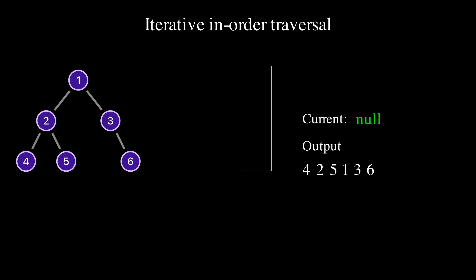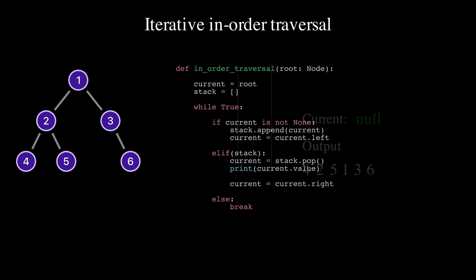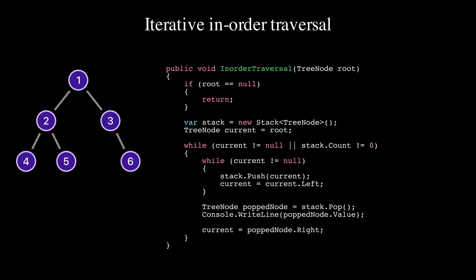Node 6 was the last node to traverse. We completed in-order traversal because the stack is empty and the current is null. Iterative and recursive implementations produce the same output and have the same time complexity. The recursive version is a bit easier to read and write. It's good to know how to implement the iterative version because it's one of the basic algorithms. Here is how to implement the in-order traversal in Python. The implementation in C# or Java is very similar.